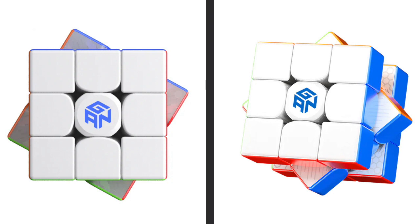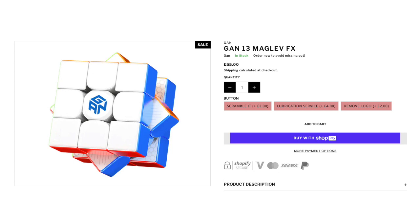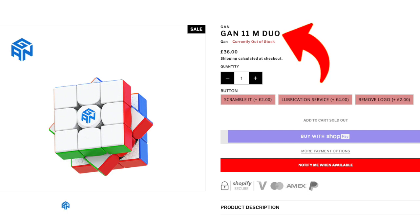Later in the year, GAN will also likely produce a new variant with magnets that are fixed in place for a cheaper price, much like they did with the 11 and 13. But that poses the question, what could they change?